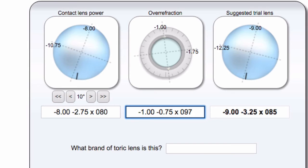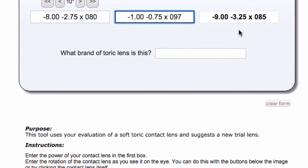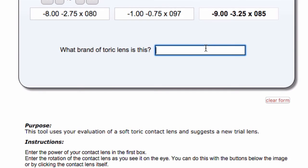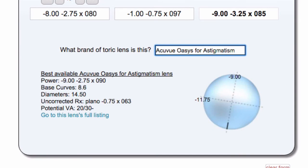For example, once you get these numbers, you look at them and say, well, this is axis 85, most contacts don't come in axis 85, they come in 80 or 90, and the cylinder power is 3.25. I know that my contacts don't come in that high of cylinder power. So what you can do is you can type in what contact lens you had on the patient's eye. For example, if it was an Acuvue Oasys for Astigmatism, you can just type in that and hit enter, and it'll tell you what the closest lens that is available to this ideal contact lens.